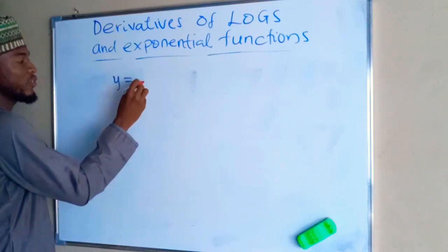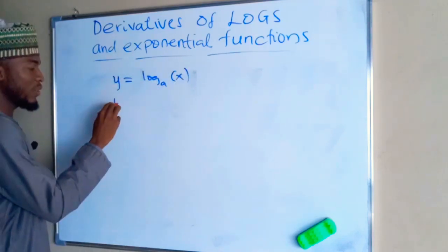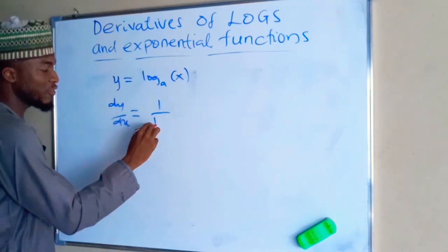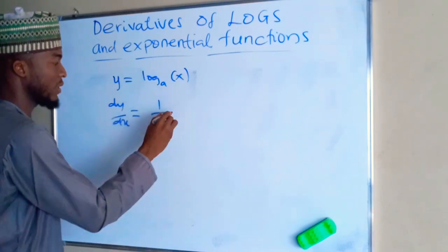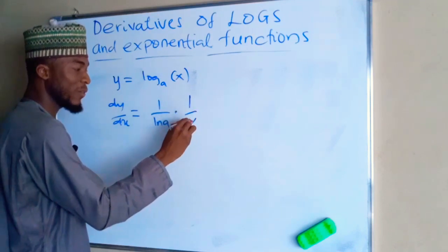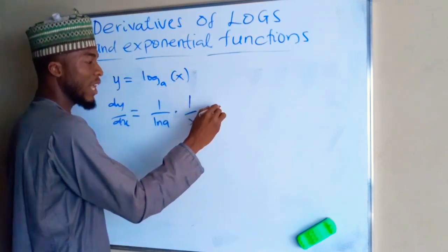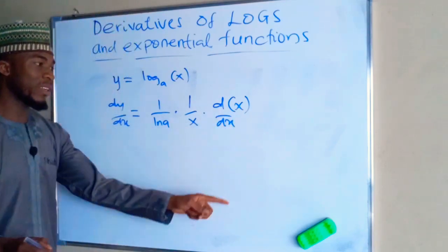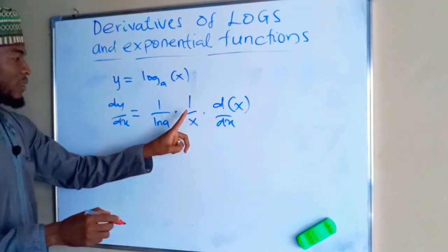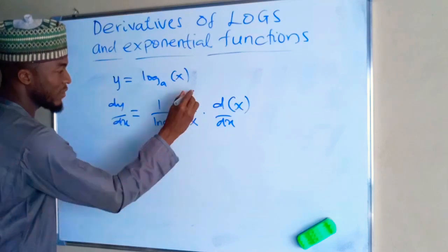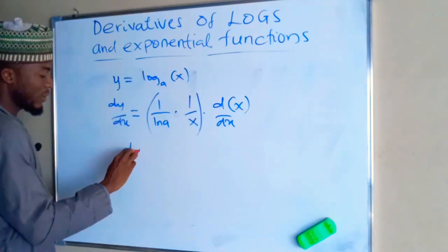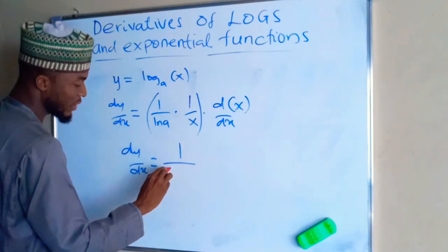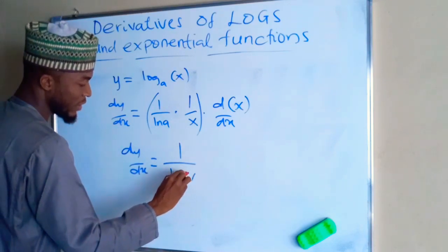For y equals log base a of x, dy over dx will be equal to 1 over the natural log of a times 1 over the function x, times the derivative of that function. The derivative of x is 1, so dy over dx equals 1 divided by the natural log of a times x.